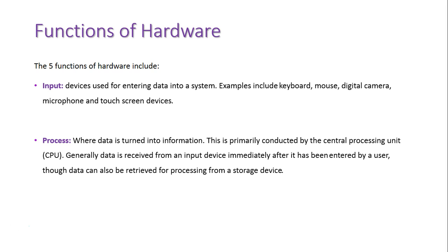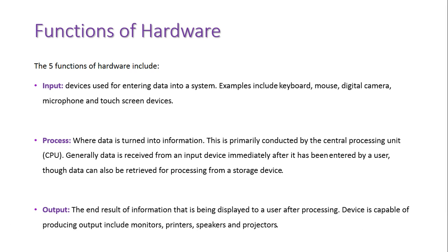Data may be inputted and processed directly, but also for processing, data may be retrieved from a storage device that was entered earlier, and then after it's been processed, sent back to a storage device. The end result of data being in a system is information, and information is then shown through an output device. Examples of output devices include monitors for displaying visually how data or information may look, printers for printing hard copies of information, speakers for audio output, and projectors for larger visual displays.